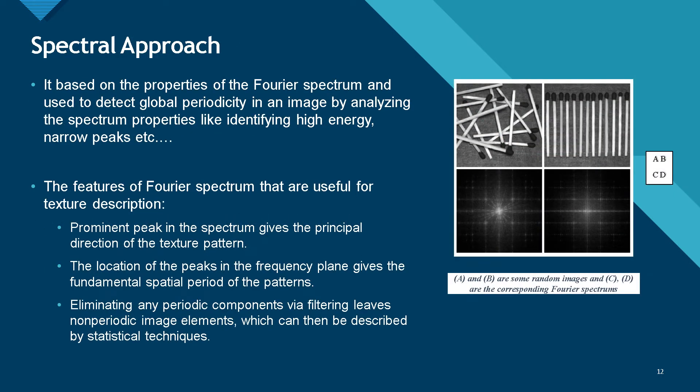Spectral approach, this is one of the important topics. It mainly depends on the Fourier transform that we have studied in 3.1 and 2.1 also, signals and systems. This method is usually used to detect global periodicity in an image by analyzing the spectrum properties like narrow peak, high energy, etc. The Fourier properties are used for texture description. Using the prominent peak, we can give the principal direction of the texture pattern, and the location of the peak and the frequency plane gives the fundamental spatial period of the pattern. Eliminating any periodic components by filtering leaves non-periodic image elements. Therefore, the non-periodic image elements we can calculate through statistical technique we learned in the above slides.